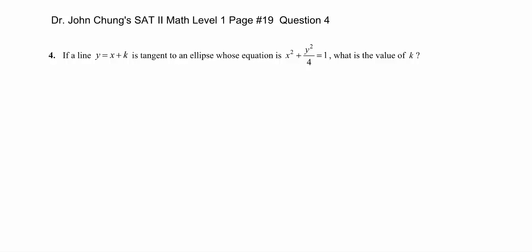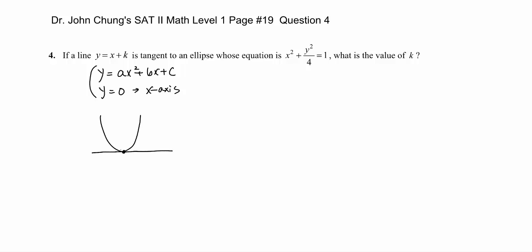They are tangent. First of all, let's go over the general quadratic. Our general quadratic — a parabola — looks like y equals ax squared plus bx plus c, and y equals zero is the x-axis. We're going to find out how tangency looks: parabola with y equals zero, and they are tangent.